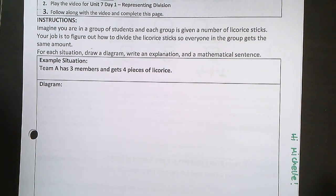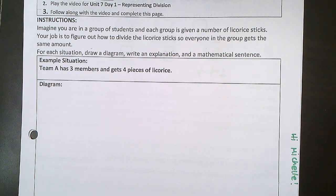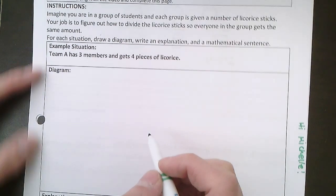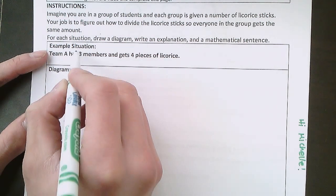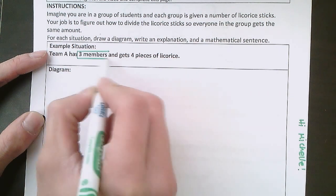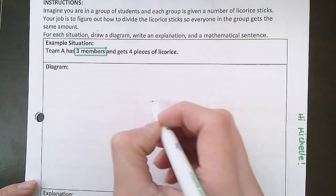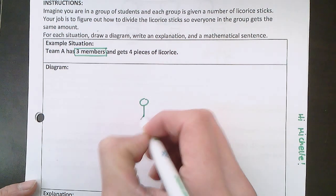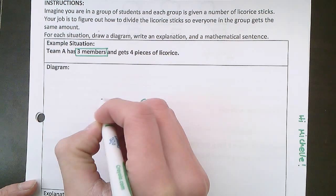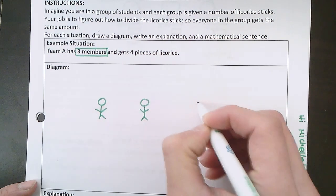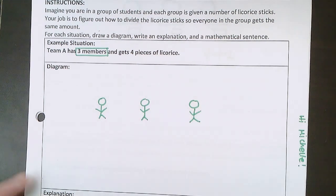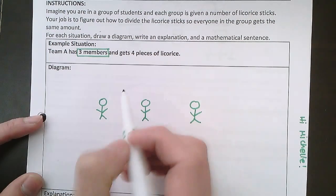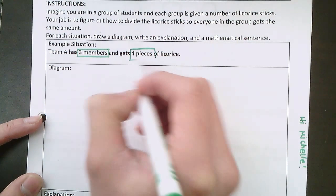Our first situation says Team A has three members and gets four pieces of licorice. You can draw your diagram however you want. I'm going to show you one way to organize the information, and if you like this way, you can do it too. But if there's another way that makes sense to you, you can do it that way also. So we know we have three members in our team, so let's draw out those three members: one, two, and three.